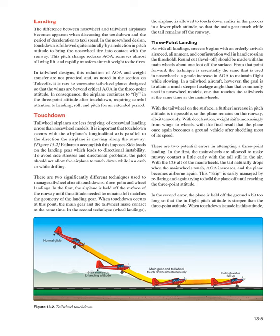Tailwheel airplanes are less forgiving of crosswind landing errors than nosewheel models. It is important that touchdown occurs with the airplane's longitudinal axis parallel to the direction of travel along the runway. Failure to accomplish this imposes side loads on the landing gear, leading to directional instability. To avoid side stresses, the pilot should not allow the airplane to touch down while in a crab or while drifting. There are two significantly different techniques: three-point landings, where the main gear and tailwheel make contact simultaneously, and wheel landings, where the main gear touches while the tail remains off the runway.